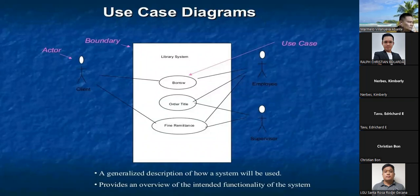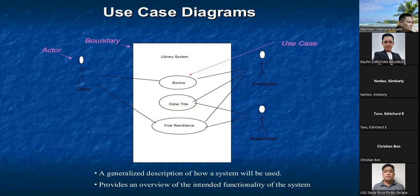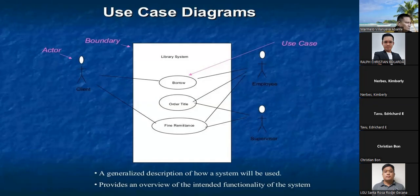Here's an example use case diagram — a generalized description of how a system will be used, providing an overview of the intended functionality of the system. The actors and use cases shown: client — borrow and file remittance; employee — borrow, order title, and file remittance; supervisor — order title and file remittance. This is a sample of how a use case diagram works.